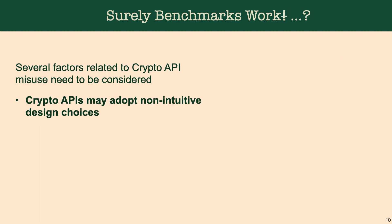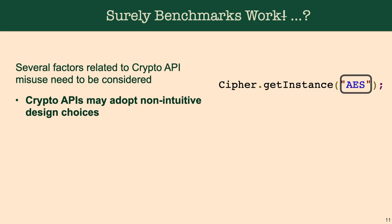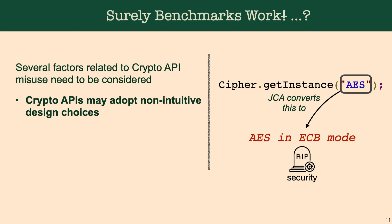There are several factors at play when we are trying to use these cryptographic APIs or relying on these benchmarks. The first one is that cryptographic APIs may adopt non-intuitive design choices. For example, we all know that AES is good for security, but in Java, if you only specify AES without specifying the mode or the padding, it will default to ECB mode, which is bad.